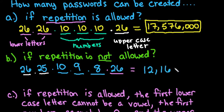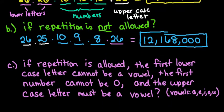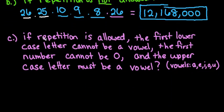Multiplying: 26 × 25 × 10 × 9 × 8 × 26 gives 12,168,000 different possibilities. Notice that by not allowing repetition it does drastically reduce the number of possible passwords. The last case has a lot of stipulations: we still have two lowercase letters, three numbers, and one uppercase letter.